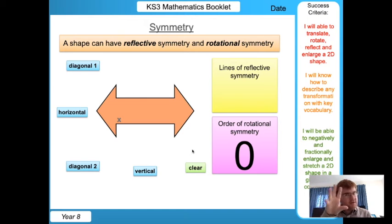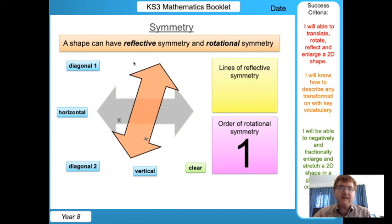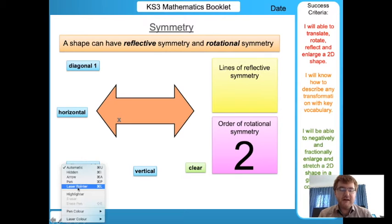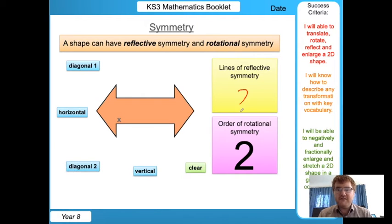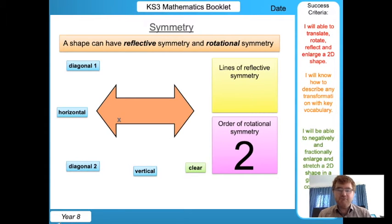Rotational symmetry means how many times can we turn the shape and it looks exactly the same. Watch carefully as I rotate this in a full turn 360 degrees. So we go around, that's one, and right back to the beginning is two. So we can say that this has got two lines of reflective symmetry, that was the horizontal and vertical, and we've also got an order of rotational symmetry which is two.